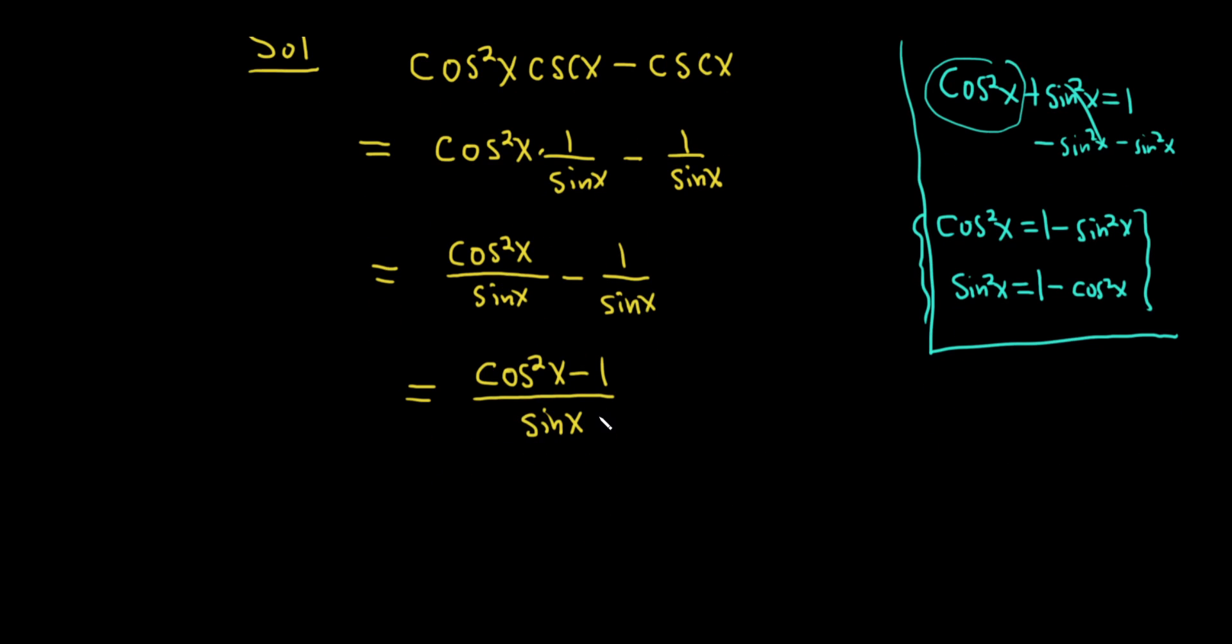So cosine squared is 1 minus the other one squared. So this is 1 minus sine squared, and then minus 1, and it's all being divided by sine x.